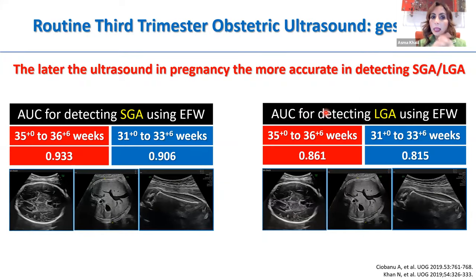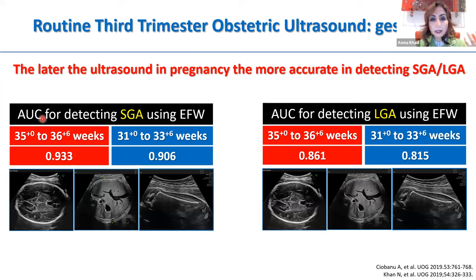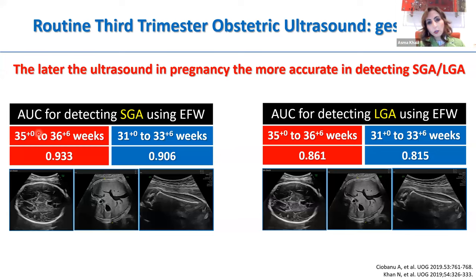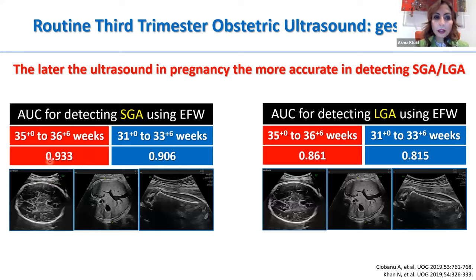Why is a later scan more accurate for detecting small or large gestational age? Looking at this data — using estimated fetal weight to detect small gestational age, comparing performance at 35 to 37 weeks versus the earlier 31 to 34 week window — the area under the curve, which represents predictive accuracy, is higher later in pregnancy: 0.930 compared to 0.906.